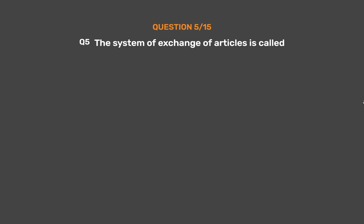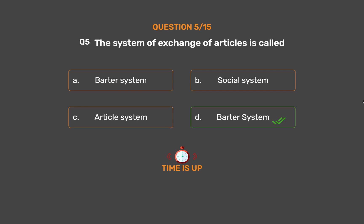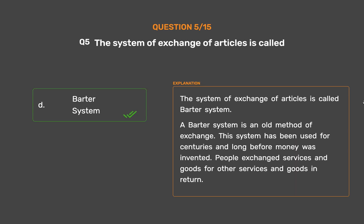Question number five. The system of exchange of articles is called: Option A - Barter system, Option B - Social system, Option C - Article system, Option D - Barter system. The correct answer is Option D: Barter system. The system of exchange of articles is called the barter system. A barter system is an old method of exchange, used for centuries long before money was invented. People exchanged services and goods for other services and goods in return.